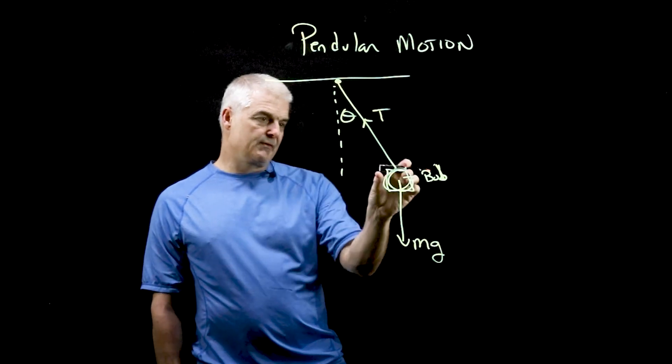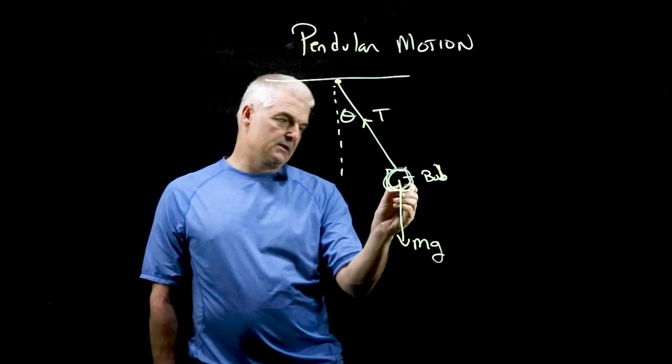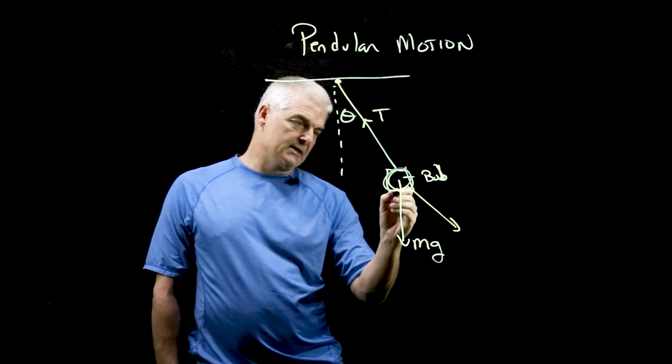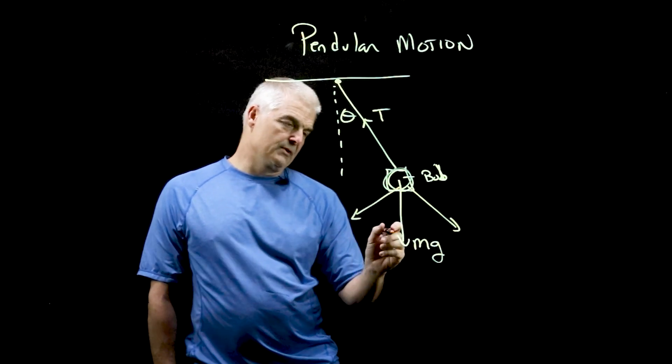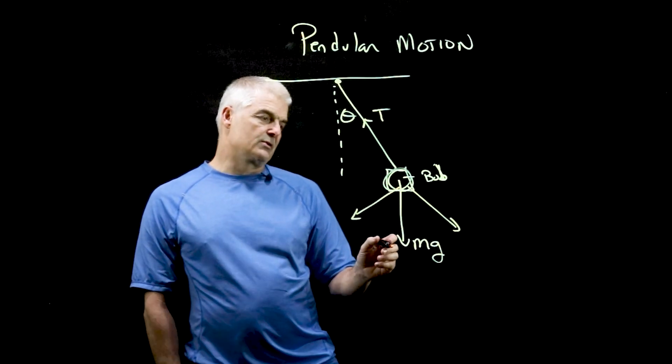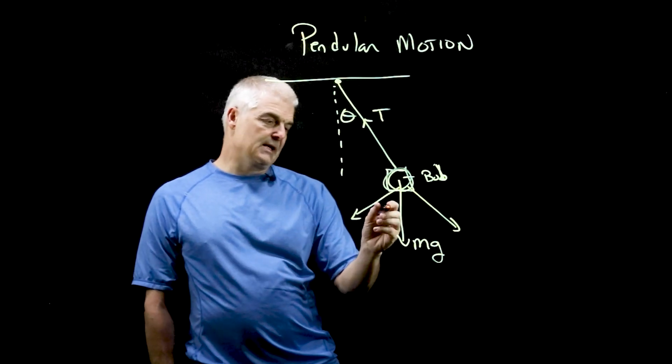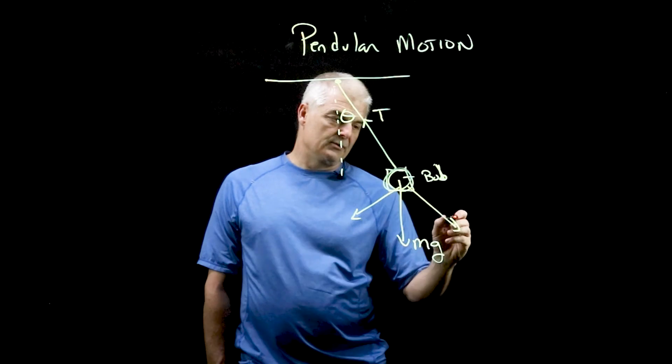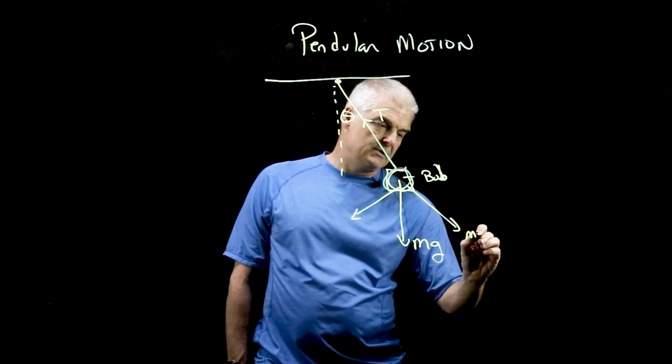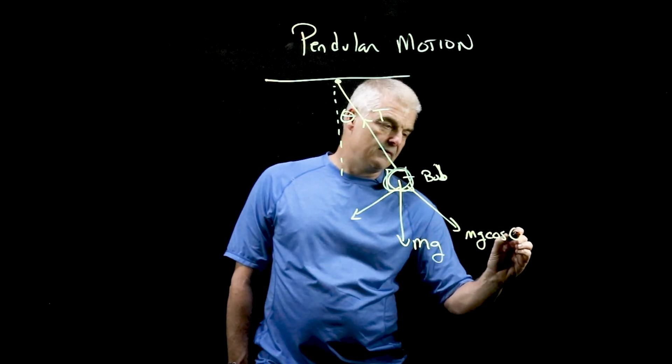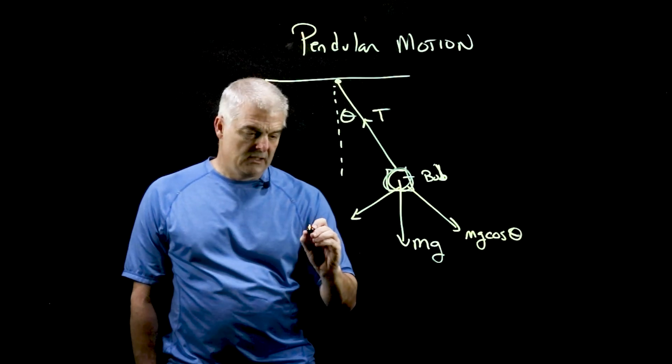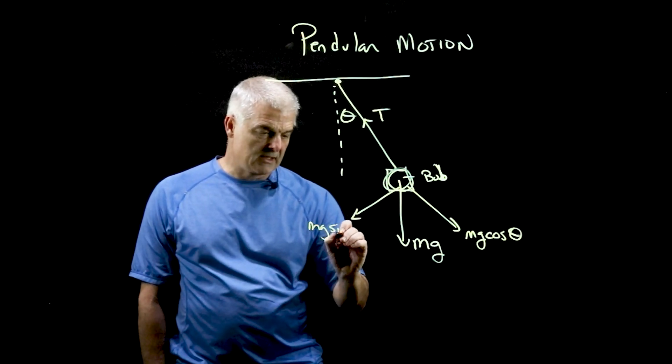But because we've got angle junk going on here, we've actually got some other angles going on. We can draw, for lack of a better term, a right triangle. We have a right triangle right here. And we can find these angles. And I'm not going to go into too much detail, but this is going to be mg cosine of theta. And this will be mg sine of theta.